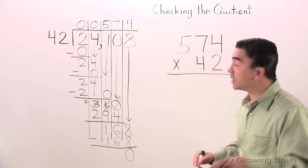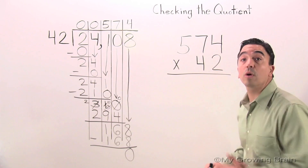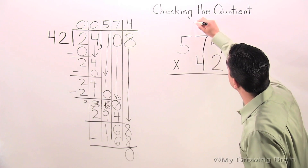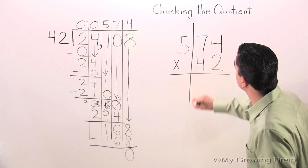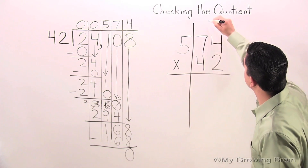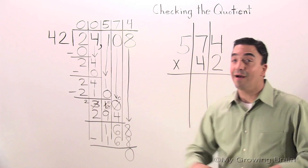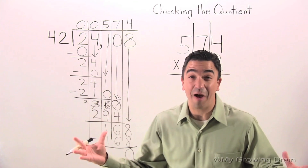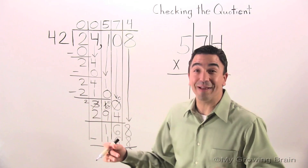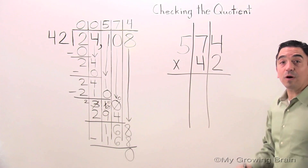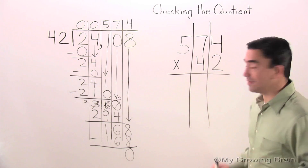First thing I'm going to do is organize my problem. I'm ready to go. Let's do it. 2 times 4 is 8.